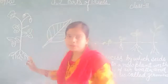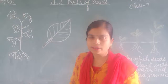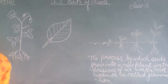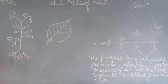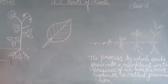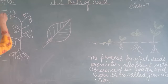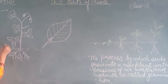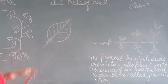First, we are going to show by this picture the parts of plants. Plants are divided into two main parts. The part below the ground is known as the root, and the part above the ground is known as the shoot part.